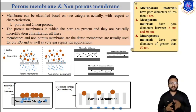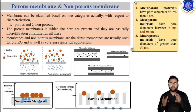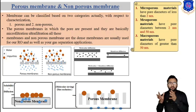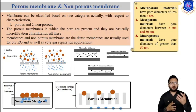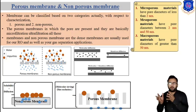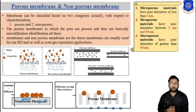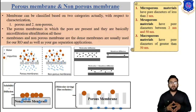The definition of 'porous' is in agreement with the definition adopted by the IUPAC. According to the IUPAC classification: macroporous membranes have pore diameter greater than 50 nanometers, mesoporous membranes have pore diameter between 2 nanometers and 50 nanometers, and microporous membranes have pore diameter lesser than 2 nanometers.